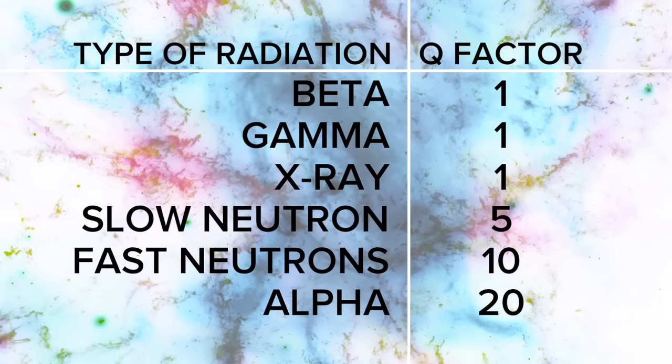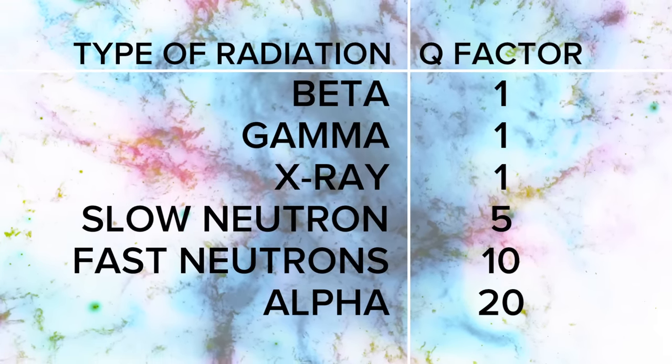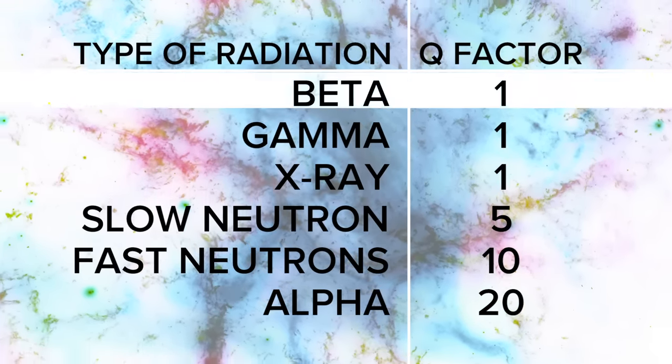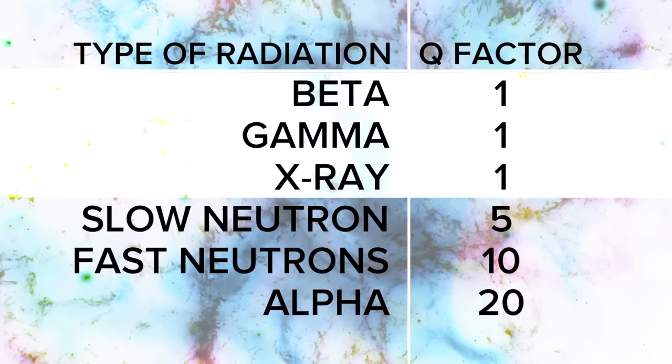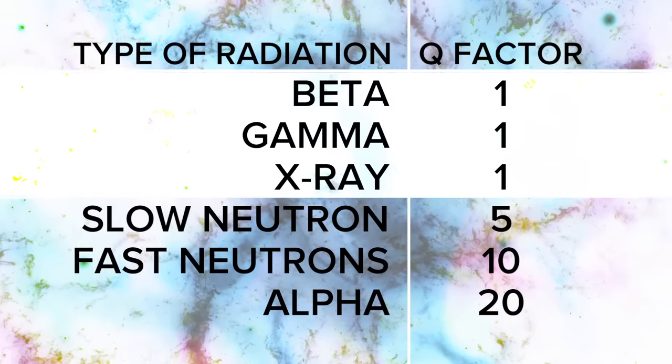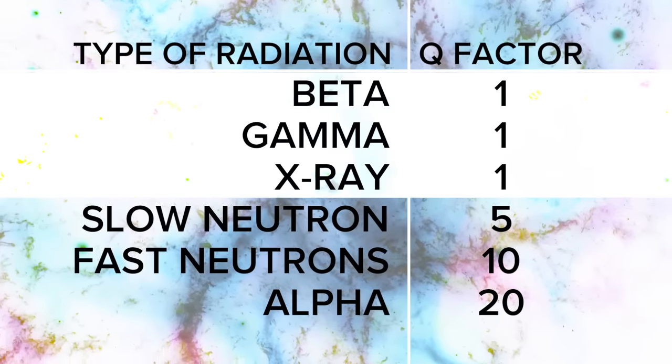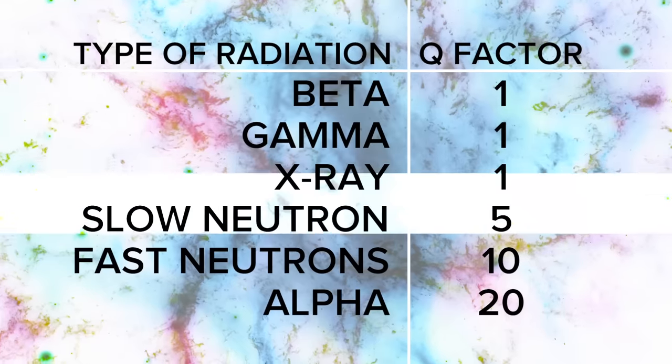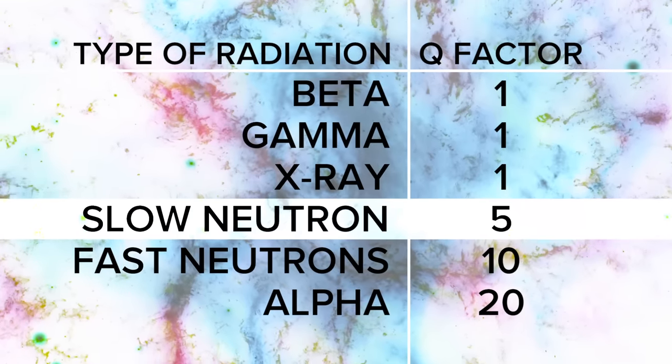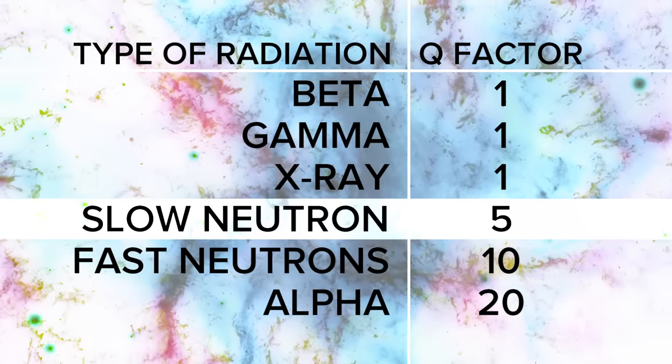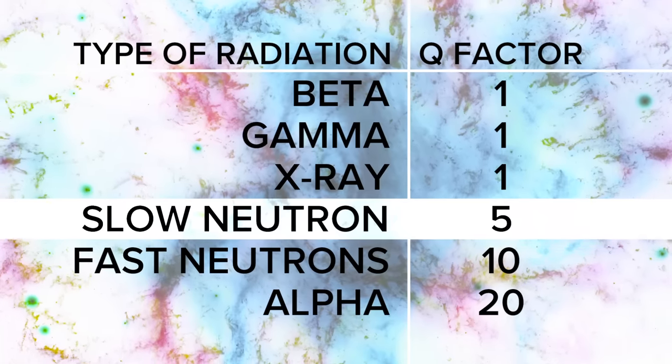So we see here a chart that shows the Q factor for different kinds of radiation. We see that gamma and beta radiation in X-rays have a Q factor of 1, which means that they don't have an enhanced damage capability. But slow neutrons have a Q of 5, which means that for the same amount of absorbed radiation, more biological damage occurs.